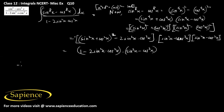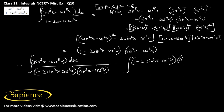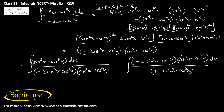The integral of (sin⁸x - cos⁸x) / (1 - 2sin²x·cos²x) dx equals the integral of (1 - 2sin²x·cos²x)(sin²x - cos²x) / (1 - 2sin²x·cos²x) dx. The (1 - 2sin²x·cos²x) terms cancel.